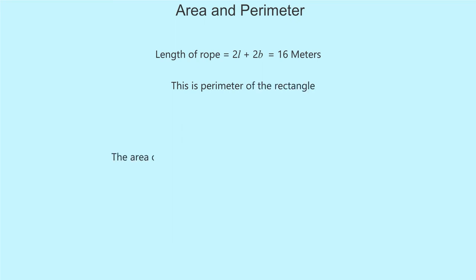The area of the square of side A is A raised to 2 and perimeter is 4A.